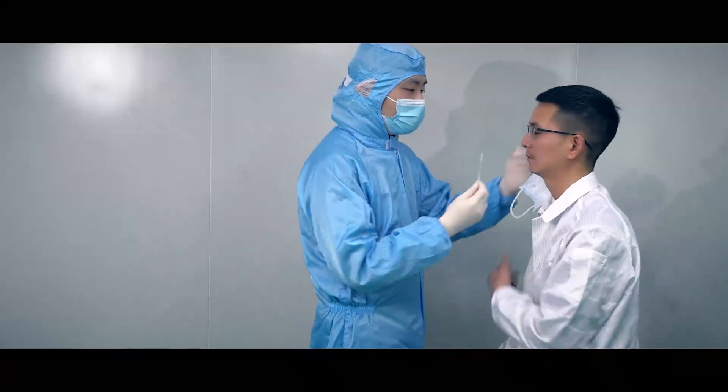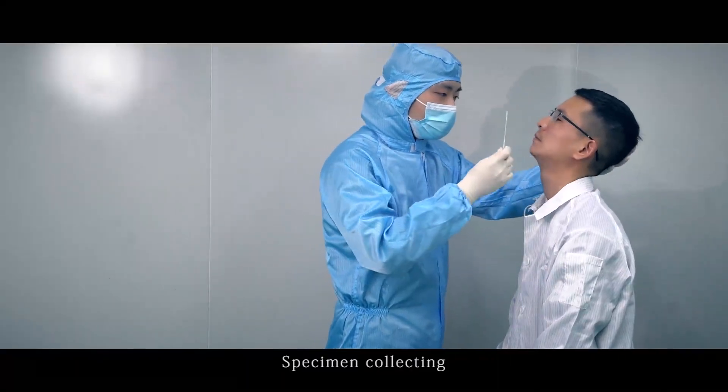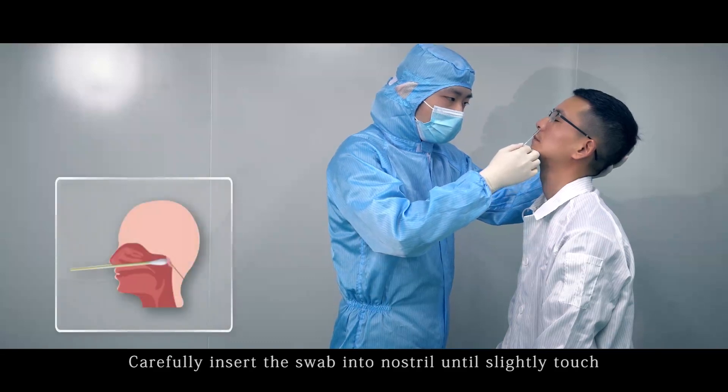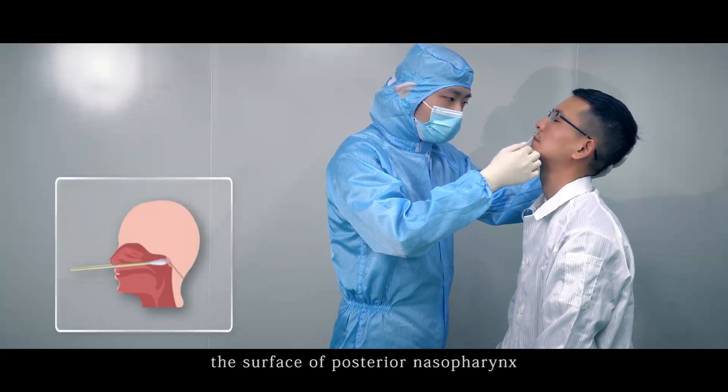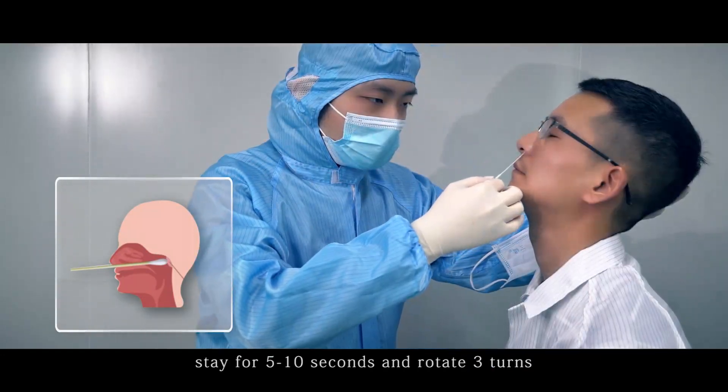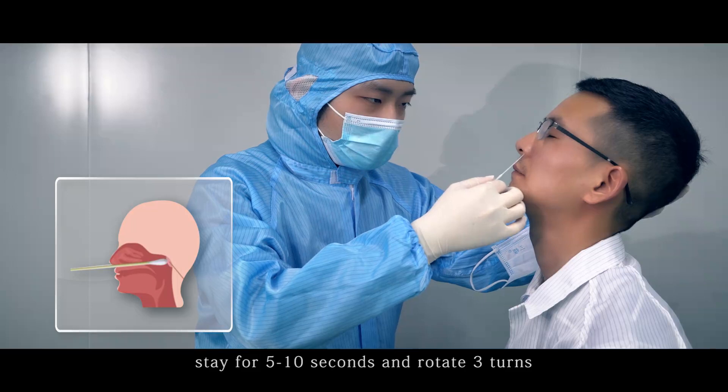Sampling of nasopharyngeal swab specimens. Specimen collecting: Carefully insert the swab into nostril until slightly touch the surface of posterior nasal pharynx. Stay for 5 to 10 seconds and rotate 3 turns.